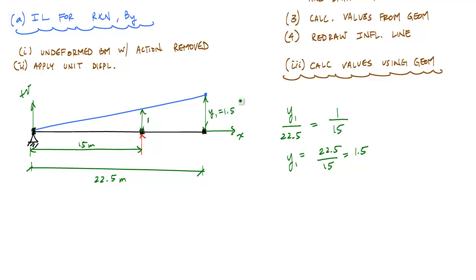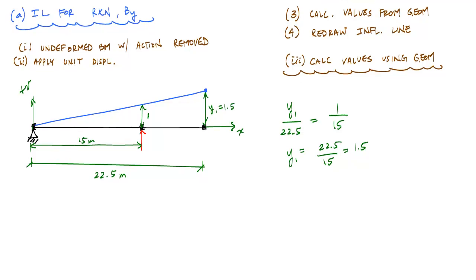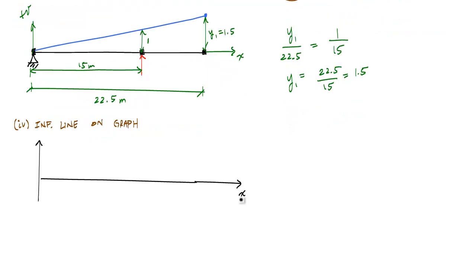Now we can redraw the influence line to make it nice and neat. Here's the position in meters. The y-axis, or vertical axis, is the influence line factor, which is really just a multiplier for the concentrated force moving across your beam to give you the vertical reaction at B.